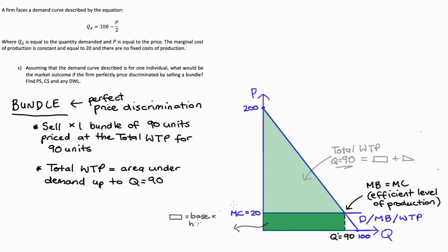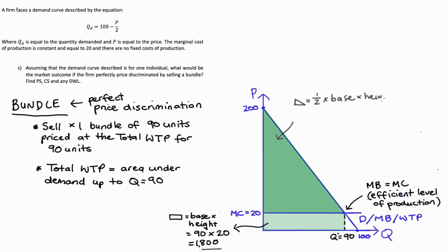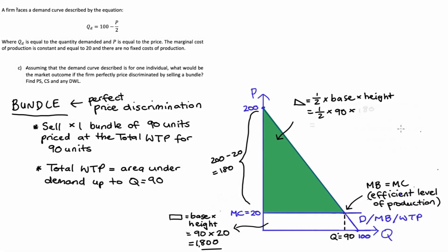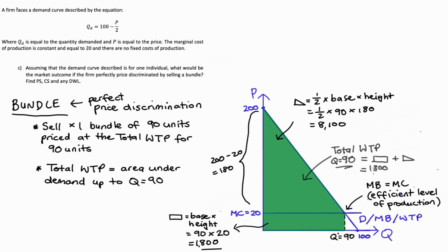To find the value of this area, I divide it into a rectangle and a triangle. The rectangle has base 90 and height 20, giving an area of 1,800. The triangle has base 90 and height equal to 200 minus 20 = 180, so its area is one-half times 90 times 180 = 8,100. The total area is 1,800 plus 8,100 = 9,900. That's our bundle price — 9,900 — and also the total maximum willingness to pay for the bundle of 90 units.